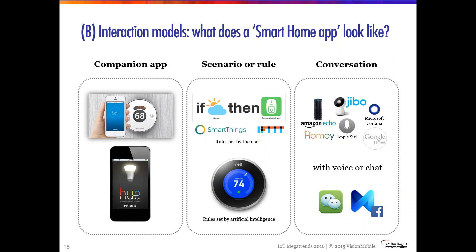Originally, and still most commonly, being smart meant being controllable remotely with a companion app — one device would have one app attached to it, such as the Lyric thermostat with the Lyric app, or the Philips Hue light bulb with the Hue app. Through this app you could see the temperature or turn on and off the lights. This is the most traditional way smart home devices are smart, but it leads to a proliferation of many different apps for all the devices in your house, which is not a desirable situation.